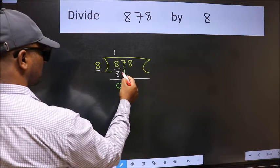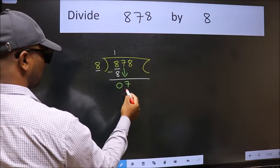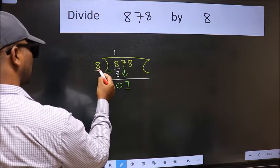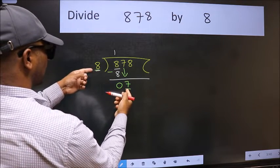After this, bring down the beside number. So 7 down. Now here we have 7 and here 8. 7 is smaller than 8.